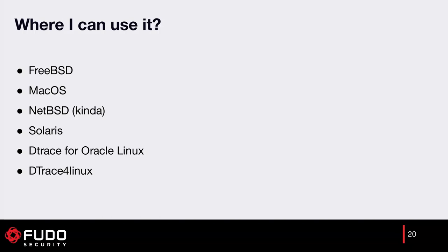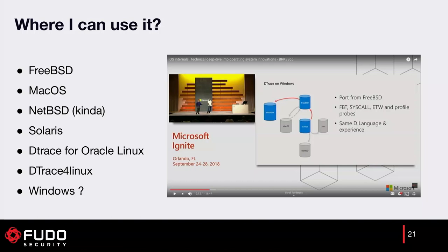Where can you use DTrace? You can use it on FreeBSD, macOS, and kinda on NetBSD — though there are some reported problems. DTrace was originally designed at Sun Microsystems, so you can of course use it on Solaris. There is also work on porting DTrace to Linux, though we didn't test it. Most interestingly, Microsoft is working to port DTrace to Windows, which would mean DTrace is available on every modern operating system.